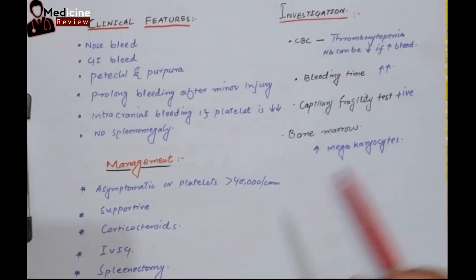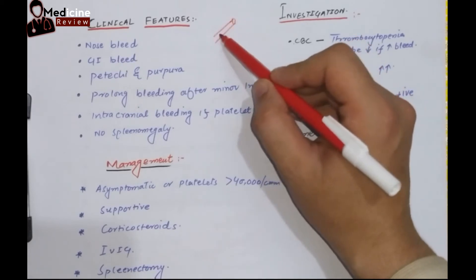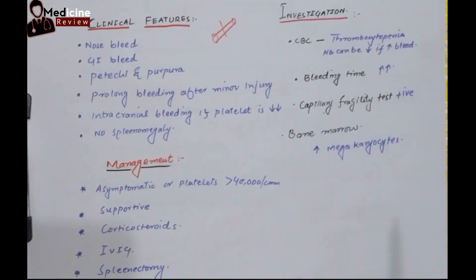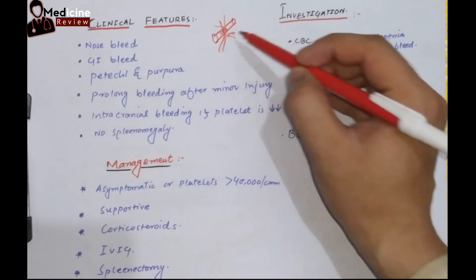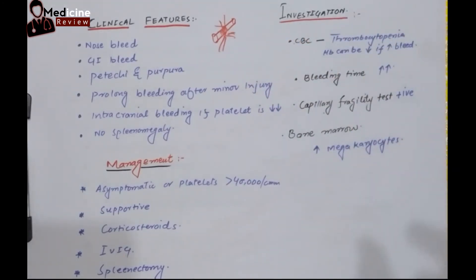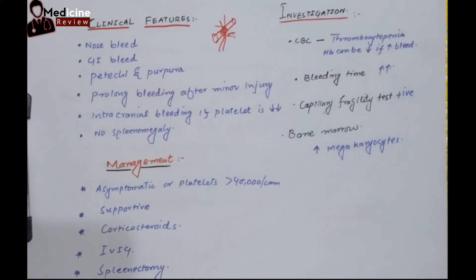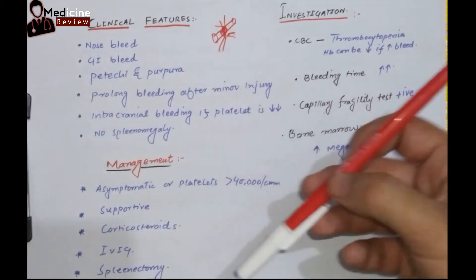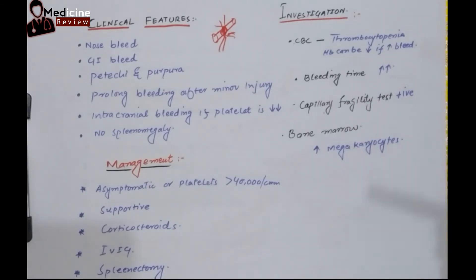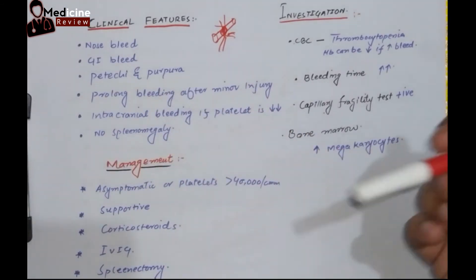Now let's look at the clinical features. Whenever there is breakage of the continuity of the blood vessel — that is, breakage of the endothelial lining — platelets normally come together, cause platelet aggregation, and form a plug to temporarily stop bleeding. But in this condition, with a reduced number of platelets, bleeding cannot be stopped. So there will be nosebleed, gastrointestinal bleed, and sometimes bleeding under the skin causing petechiae and purpura — these are bleeding manifestations on the skin.